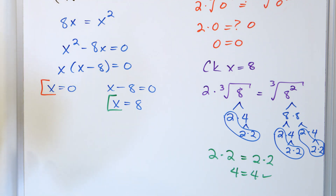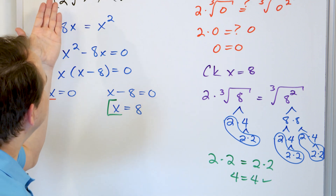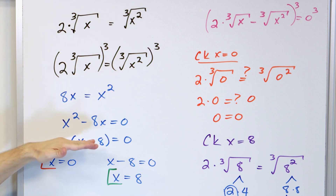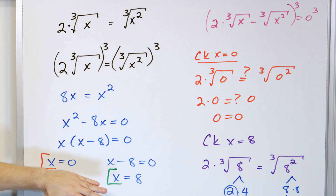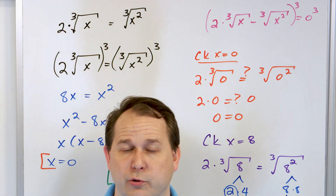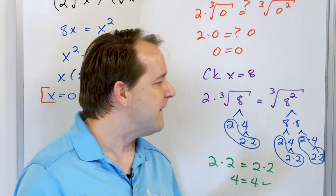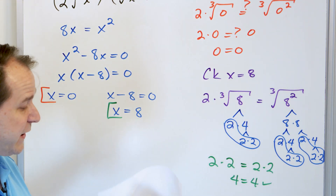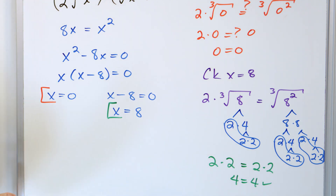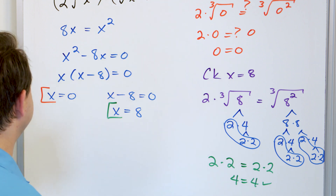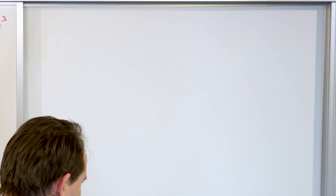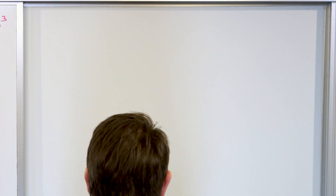So you're putting together a lot of different skills: dealing with cube roots, raising a cube root to a power, factoring, setting everything equal to zero and solving. When you put the answers back in, you sometimes have to perform the cube root using a factor tree. In this case, we got two answers and both of them were correct. But in the next problems, some of the solutions will not be valid, so we have to be careful.